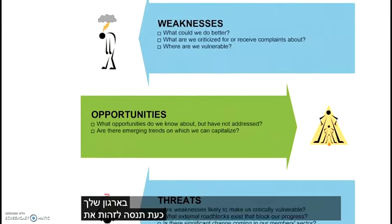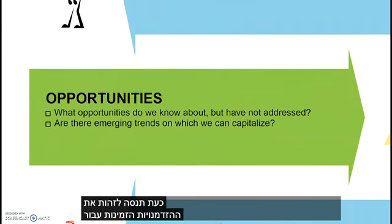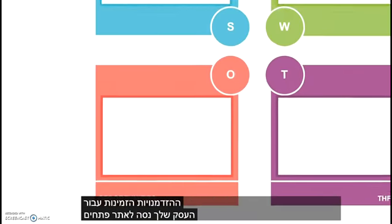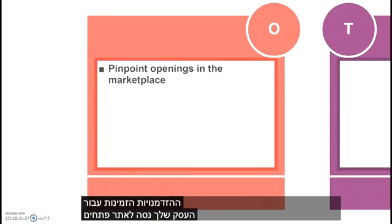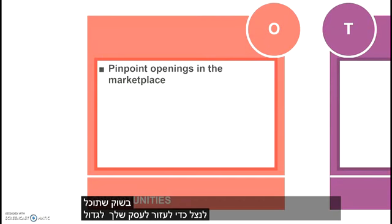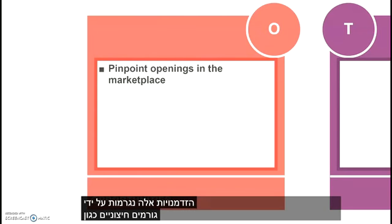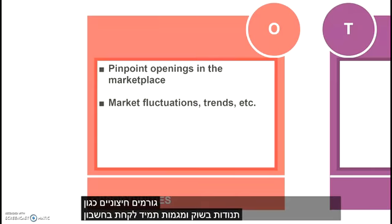Now, you'll try to identify the opportunities available for your business. Try to pinpoint openings in the marketplace that you can take advantage of to help your business grow. These opportunities are caused by external factors, such as market fluctuations and trends.